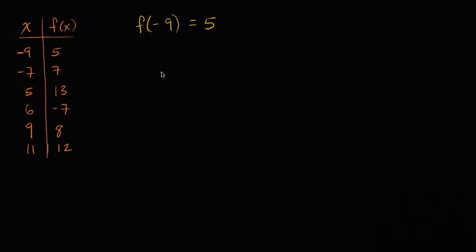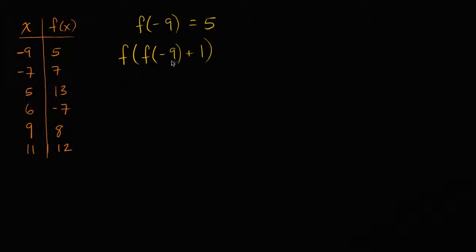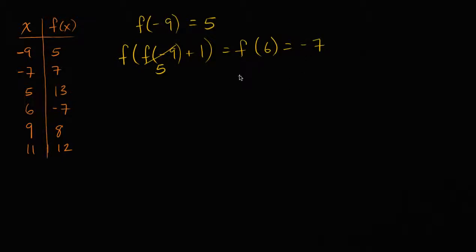And you might already have experience with doing composite functions, where you say f of negative nine plus one. So this is interesting — it seems very daunting. But you say, oh well, we know what f of negative nine is — this is going to be five. So it's going to be f of five plus one, which is going to be equal to f of six. And if we look at our table, f of six is equal to negative seven. So all of that is a review so far.